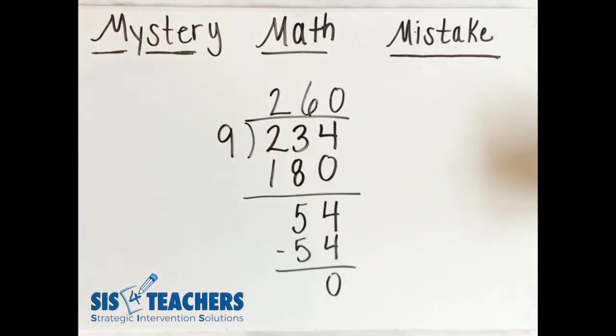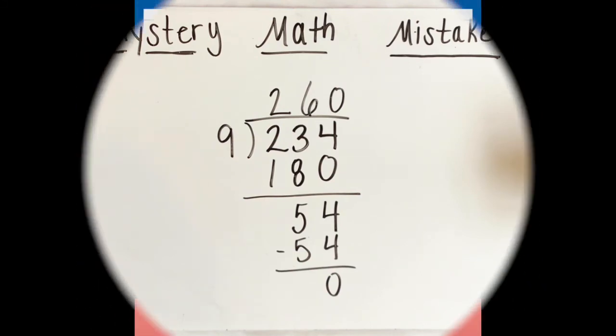234 divided by 9 definitely in my mind equals 260. I can't wait to hear from you to see if you can find our mystery math mistake. Thanks so much for joining us.